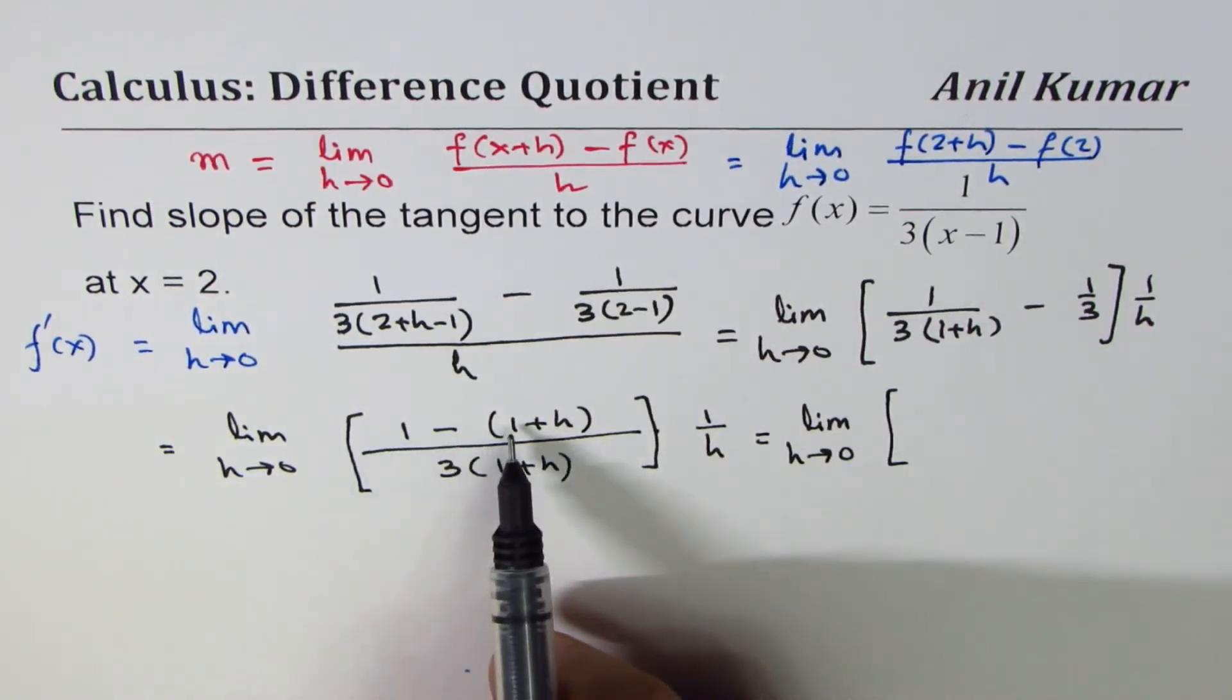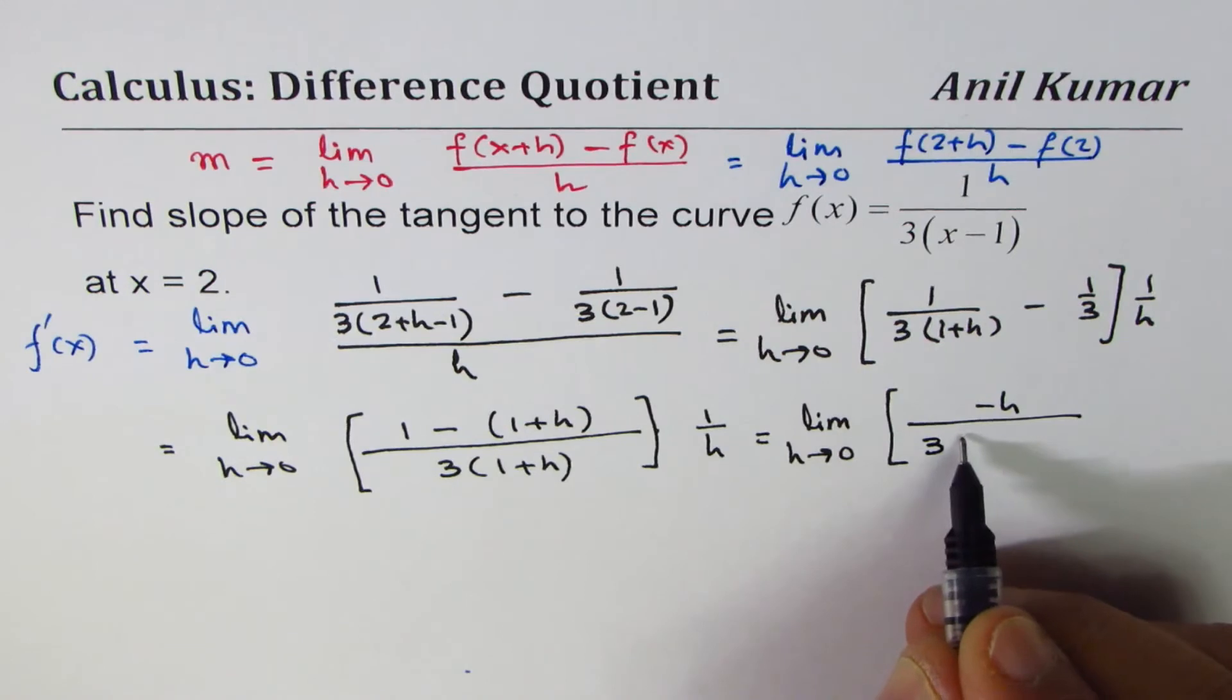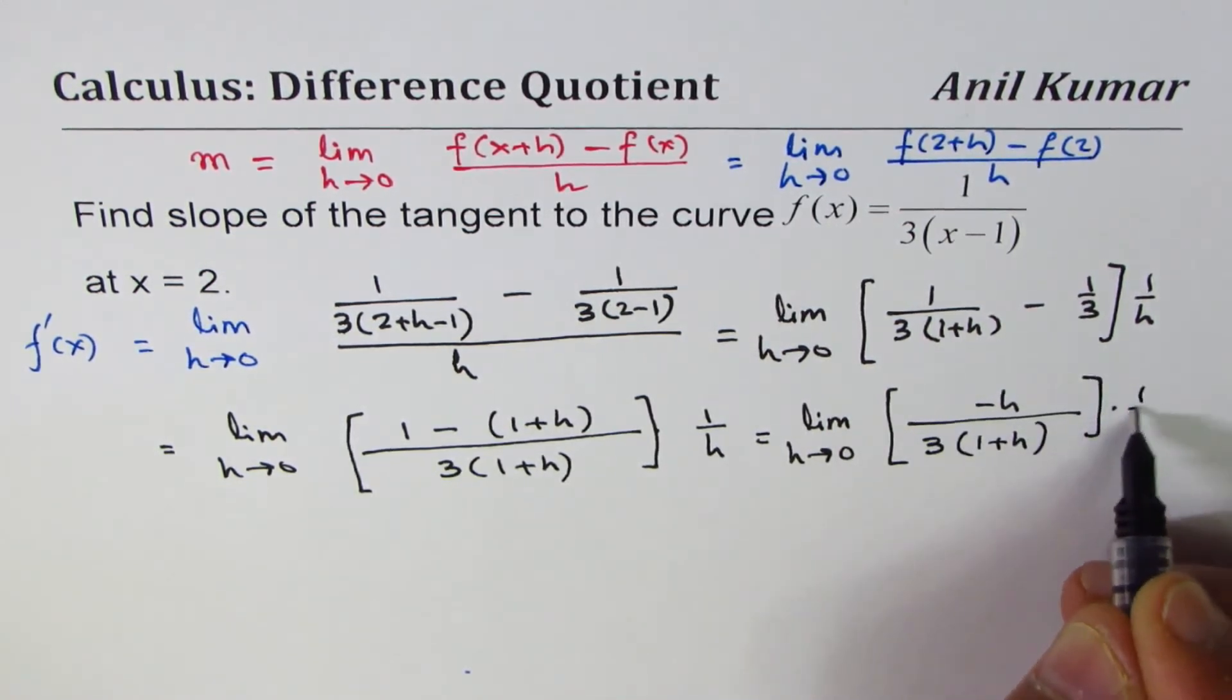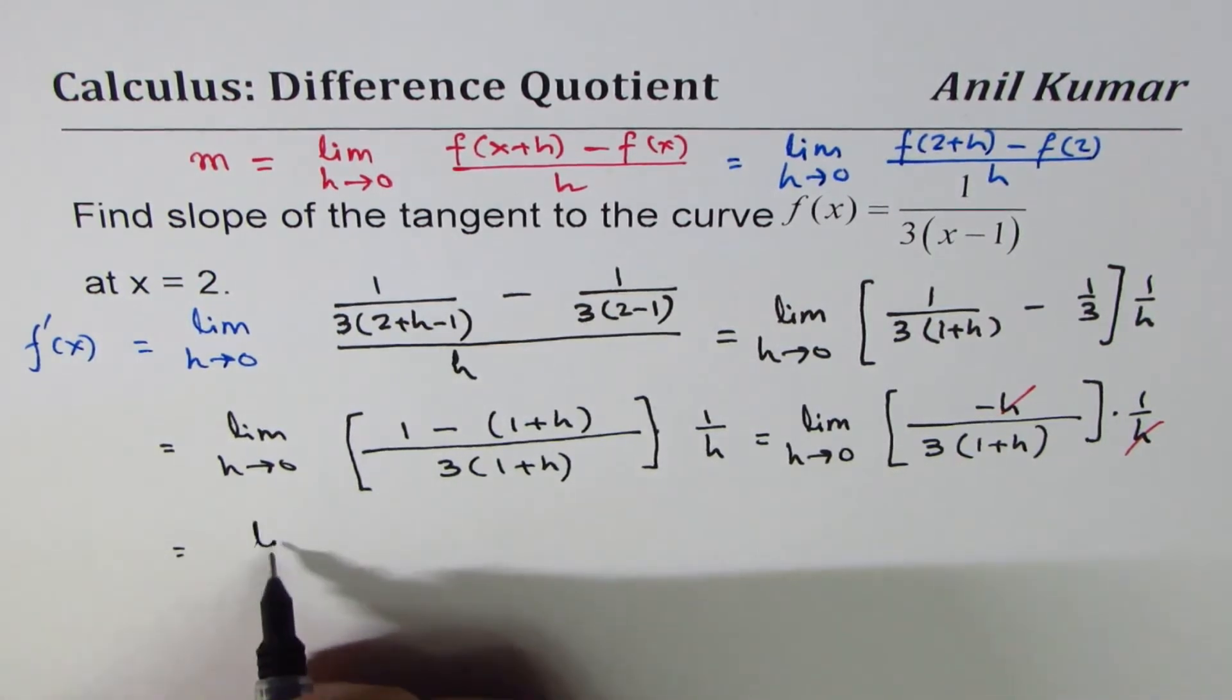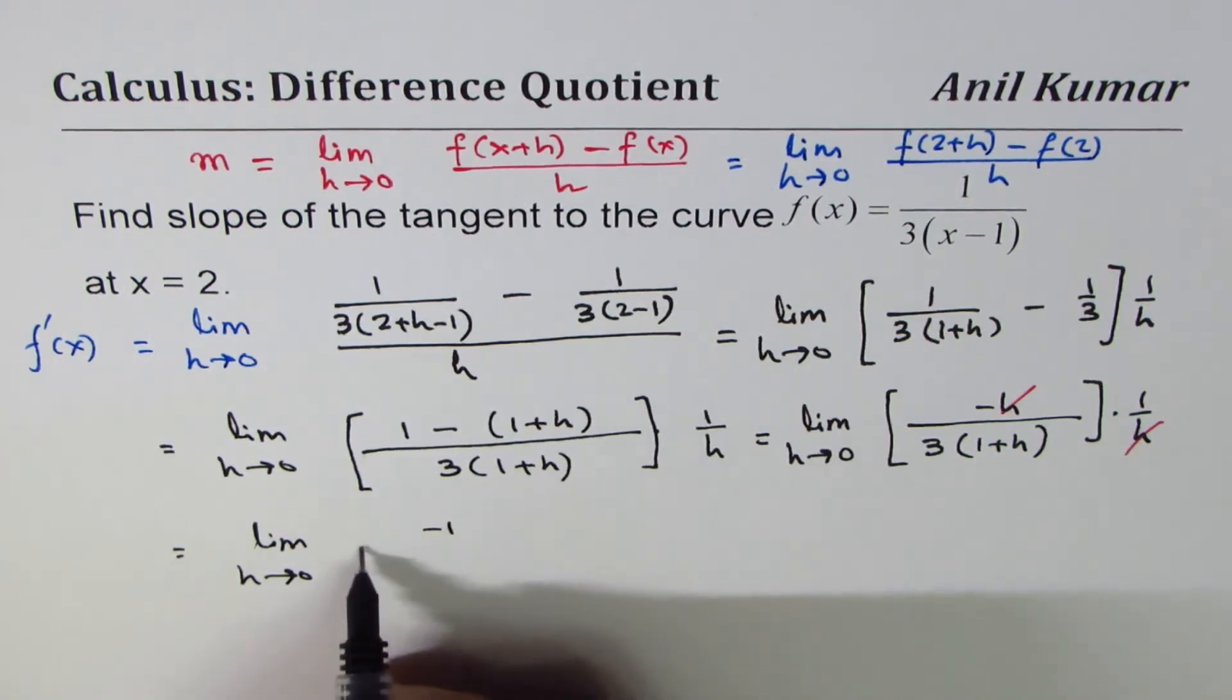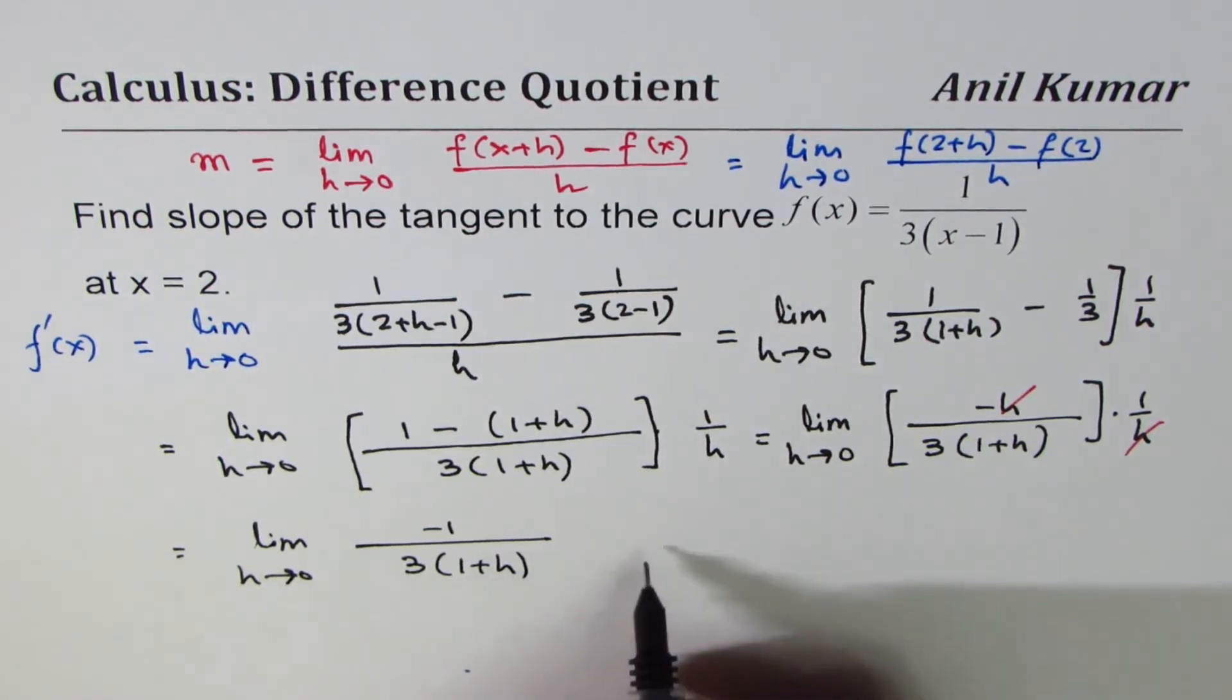1 minus 1 is 0, so we are left with minus h divided by 3(1+h) times 1 over h. Now h and h cancels, so we could write this as limit h approaches 0 of -1/(3(1+h)). Now we can substitute h as 0, so we get -1/3.